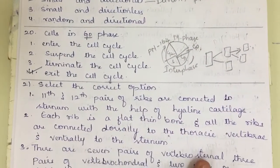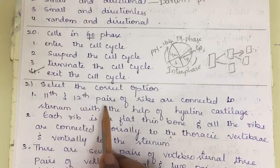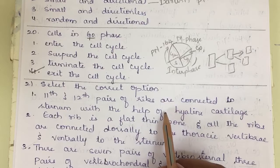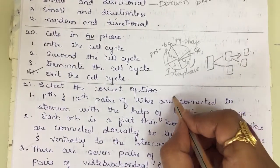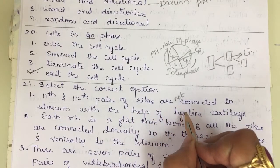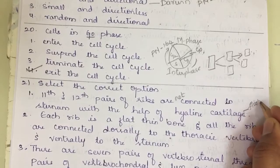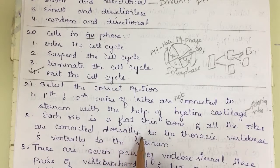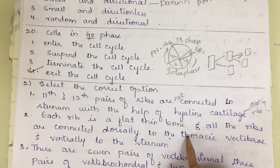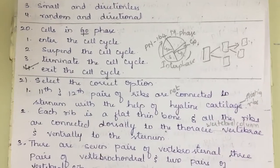Question 21: Select the correct option. Statement one says the 11th and 12th pairs of ribs are connected to the sternum — this is wrong, as they are not connected to the sternum; they are called floating ribs. Statement two says each rib is a flat, thin bone and all ribs are connected dorsally to the thoracic vertebrae — this is wrong because it should say 'vertebral column,' not thoracic vertebrae specifically.